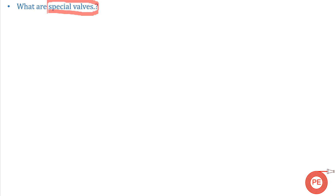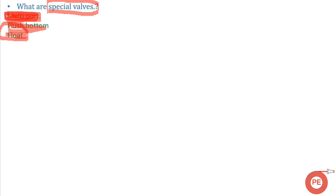The next question is: what are the special valves? Special valves include multi-port valves, which are used instead of root valves in power plants. Flush bottom valves have special uses in the industry. Float valves are used in tanks — a float rises as the fluid level rises and settles down when the level drops. PRV (pressure relief valve) serves as a safeguard, relieving excess pressure out of the system.